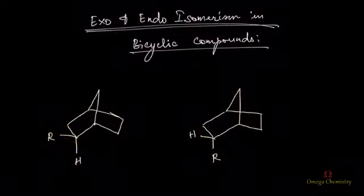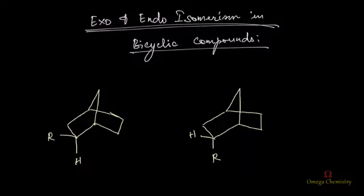Hello everyone, today we are going to look at exo and endo isomerism in bicyclic compounds. In bicyclic compounds, syn and anti are synonymous with exo and endo. When a ring or a group — when two rings — if they are in cis position, it will be called exo. If they are in anti position, they will be called endo.